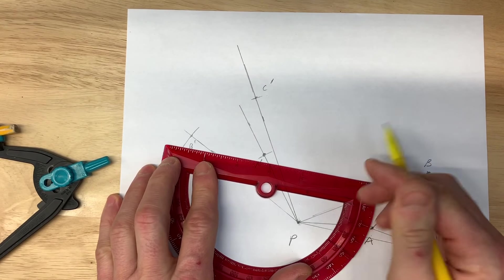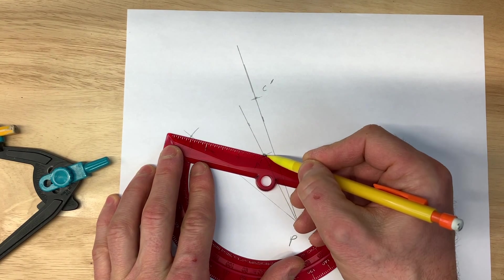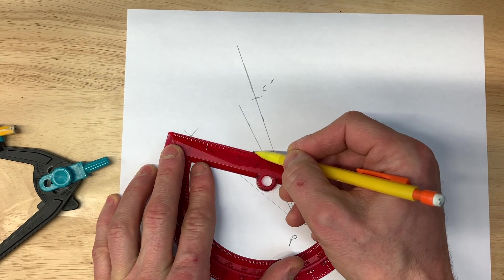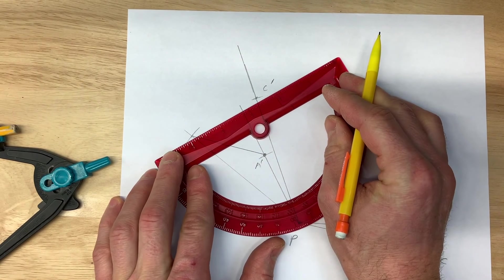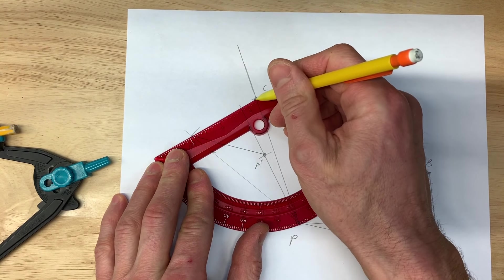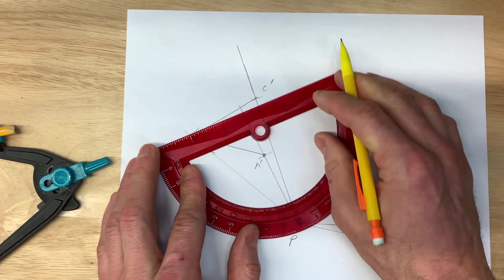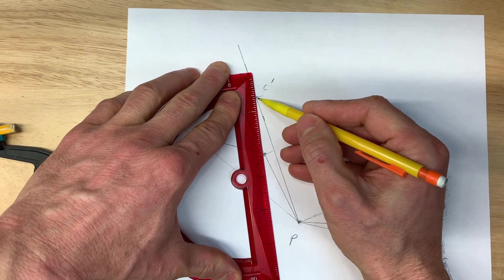Now all we have to do is connect A prime, B prime, and C prime together. Let's see if that looks congruent to our original triangle. It should be exactly the same size and shape, just rotated now 120 degrees.